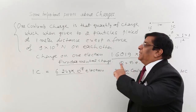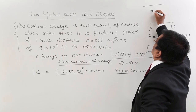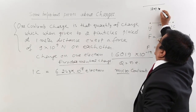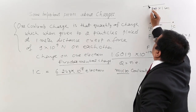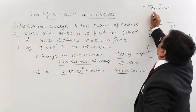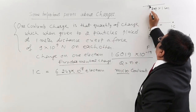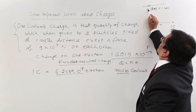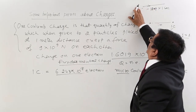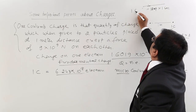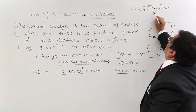In the SI system we have agreed to take electric current of 1 ampere as the fundamental quantity. The relation between 1 ampere and coulomb is: if a wire carries 1 ampere for 1 second, then the quantity of charge that has crossed it is 1 coulomb. So 1 coulomb equals 1 ampere flowing for 1 second.